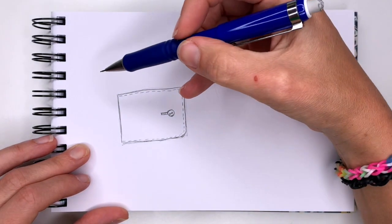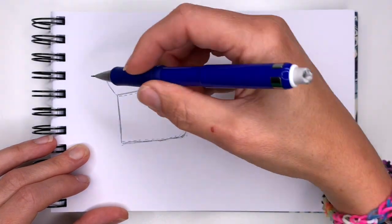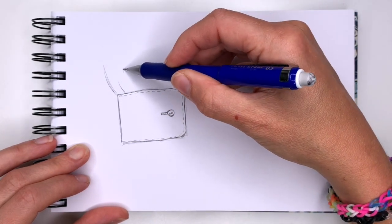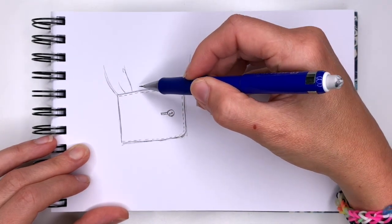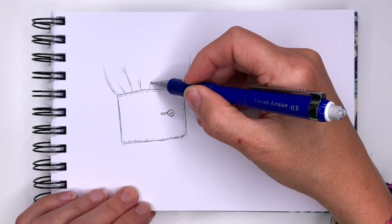Now the sleeve would be here. So you can indicate it by drawing curved lines. And then you can add some more lines that will show us that the sleeve, the fabric bunches in in such a cuff.